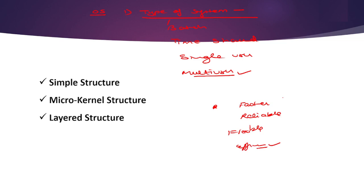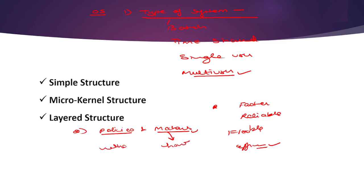The next step is to determine the policies and mechanisms. Policies and mechanisms of operating system design are very important. Policies determine what should be done on a particular occasion, and mechanisms determine how it should be done. After we are satisfied with our requirements and specifications, the task of implementation of the system is started.